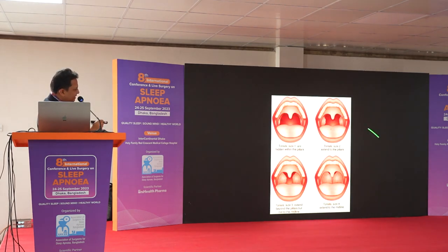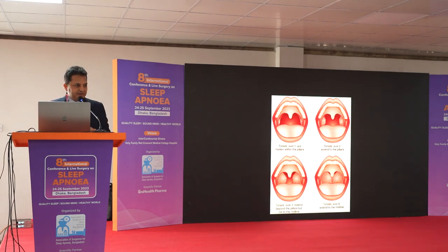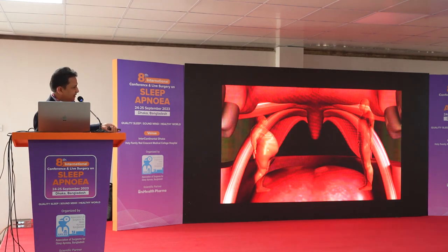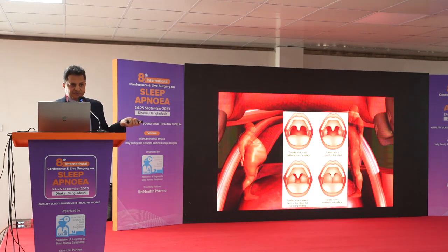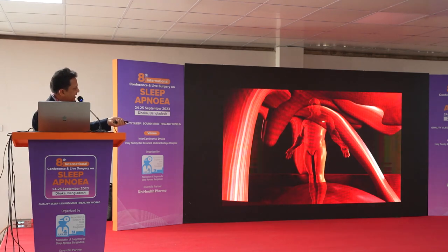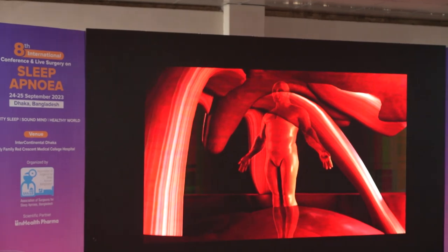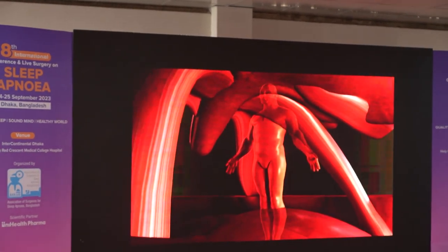Another very important point: we do not fully understand tonsil size. We only grade tonsils as grade one, two, three, or four based on what we see from the front, but the tonsil is a three-dimensional structure — it has height, width, and depth. We cannot decide based on only one axis. We also have to assess the height and width of the tonsil. If the shoulder of the tonsil is wider, the posterior pillar will be pushed further back.